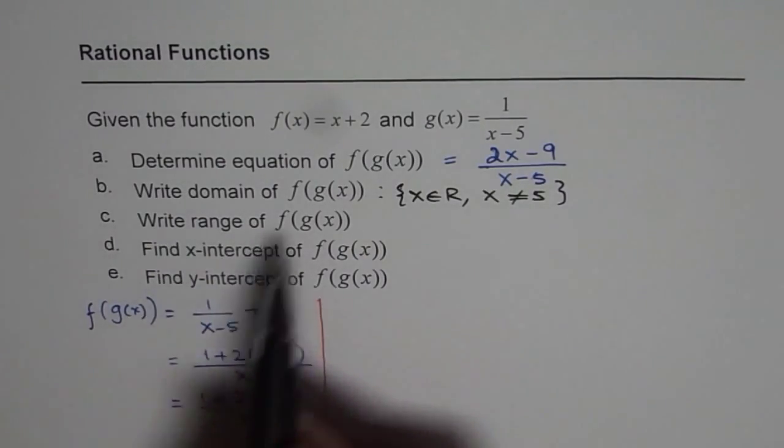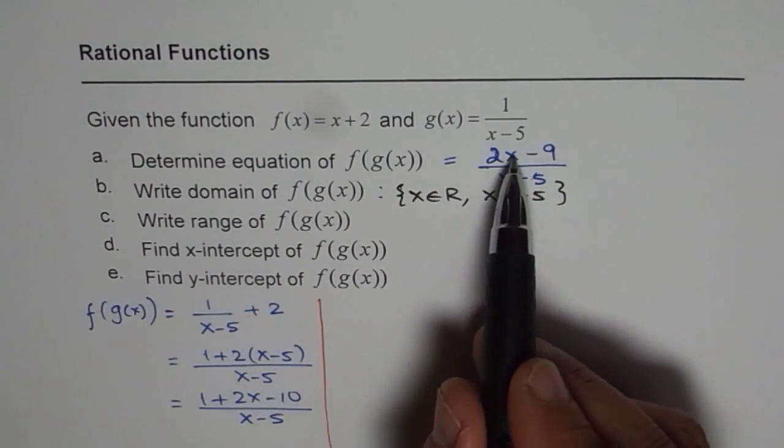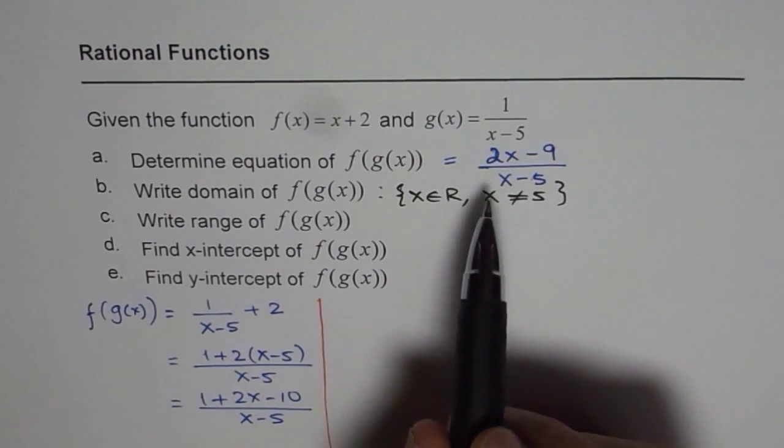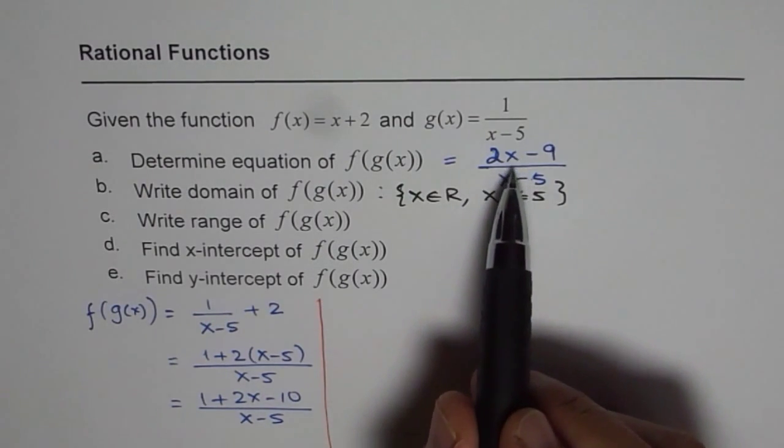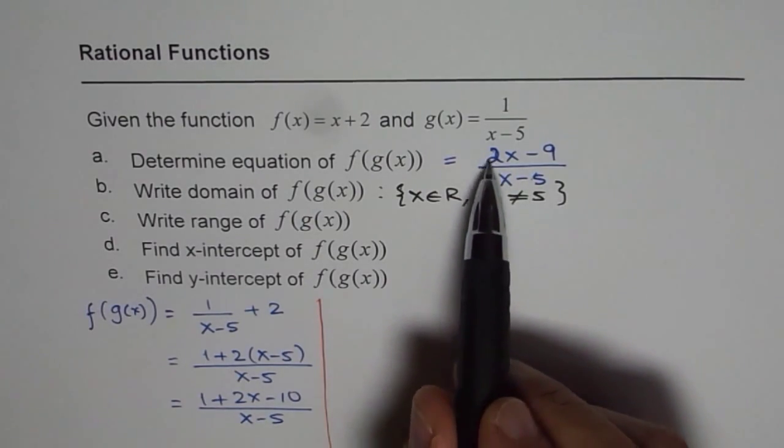Write range of the function. Now as you can see from the function, if x is very large then the function will approach 2. Degree of numerator and degree of denominator is 1. Therefore there is a horizontal asymptote at 2 over 1 or 2.